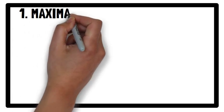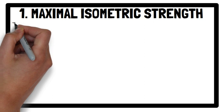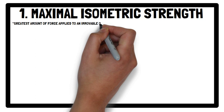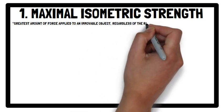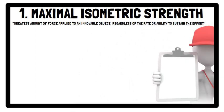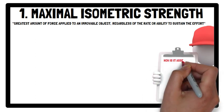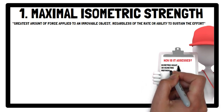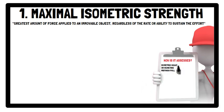The first strength quality is maximal isometric strength — the greatest amount of force applied to an immovable object, regardless of the rate or ability to sustain the effort. It is typically assessed using an isometric squat or isometric mid-thigh pull, whereby maximal force is applied to an immovable bar for 2–5 seconds, using a force platform or strain gauge to quantify force production.